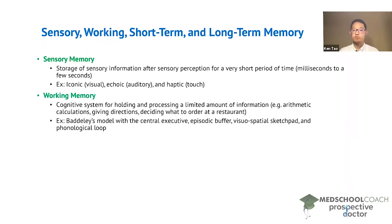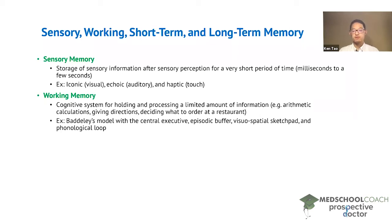Next, we have working memory. Working memory is the cognitive system for holding and processing a limited amount of information. Examples include basic arithmetic calculations — such as trying to do 14 times 7 — or if you're trying to give directions to your home or work, or if you're trying to decide what to order at a restaurant. All of these situations are examples of working memory.